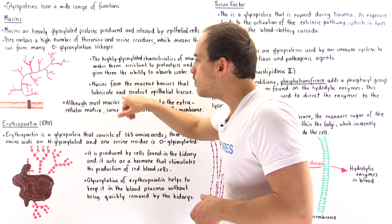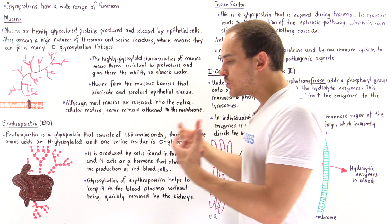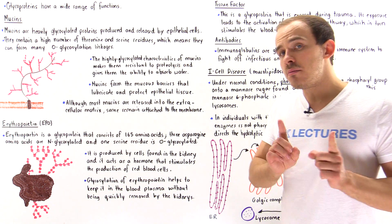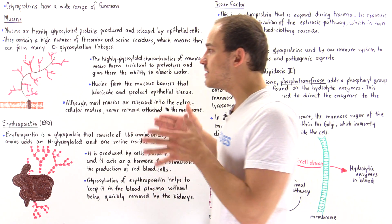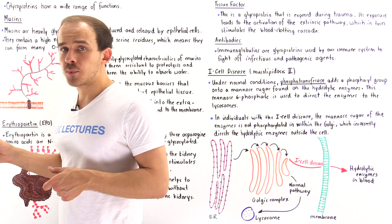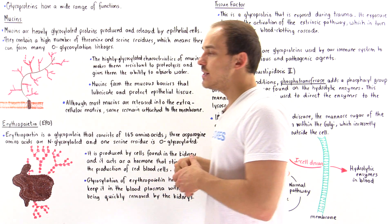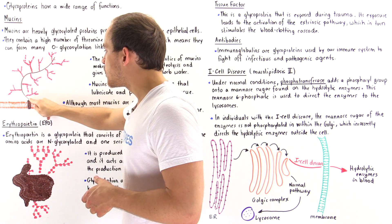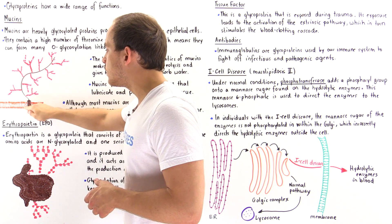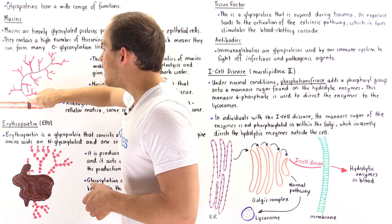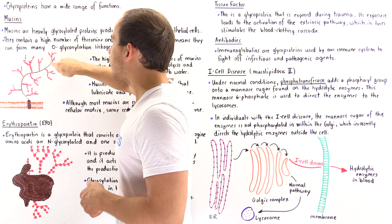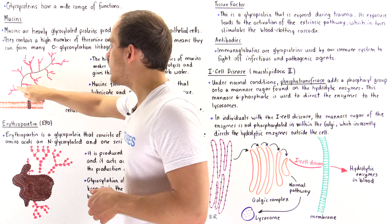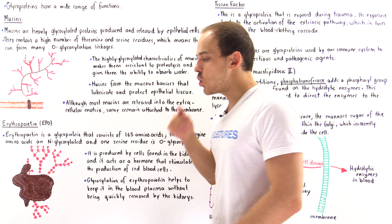Although most mucins are produced by the cells and released into the extracellular matrix, some of these mucins actually remain attached onto the cell membrane, as shown in this diagram. We have the cell membrane, a hydrophobic section of the protein shown in brown, the rest of that protein, and many oligosaccharides attached as shown.